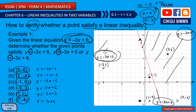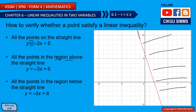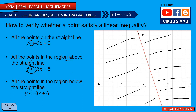This method involves graphing. In conclusion: all points on the straight line satisfy y = -3x + 6 (equal). All points in the region above the straight line satisfy y greater than -3x + 6. All points in the region below the line satisfy y smaller than -3x + 6. We will learn more about this in the next lesson.